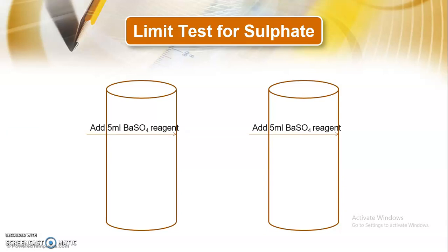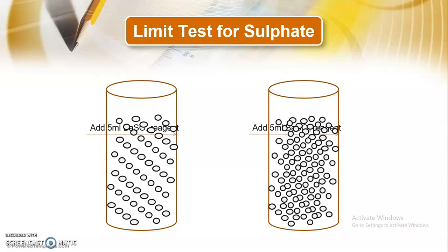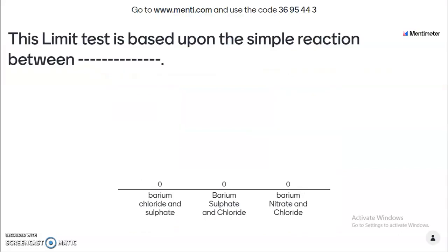Next, add 5 ml of barium chloride reagent to both solutions. The barium chloride reacts with the sulphate, leading to formation of a precipitate of barium sulphate. As you can see, the test sample shows less opalescence — a less turbid solution — compared to the standard. If the opalescence produced in the test solution is less than that of the standard solution, the sample passes the limit test for the sulphate.